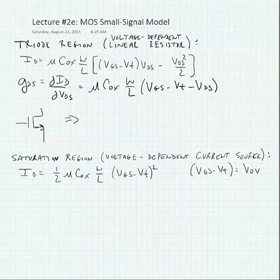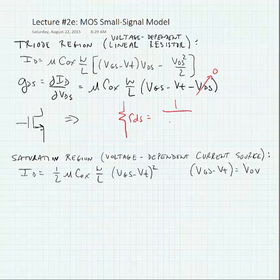And normally in the triode region, we consider that the voltage across the transistor, the drain-to-source, is very small. And so our model looks like a resistance, Rds, that's equal to the inverse of the conductance. And of course, we can vary the value of this resistance by varying the voltage.